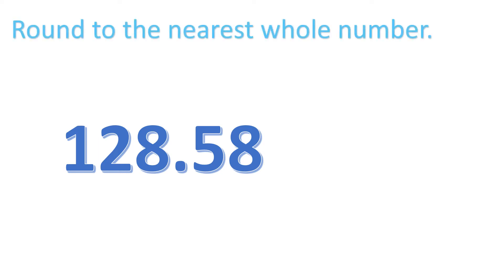So let's take, for example, we have a decimal number, 128 and 58 hundredths, and we are tasked to round to the nearest whole number. So if you say whole number, it means the ones place.